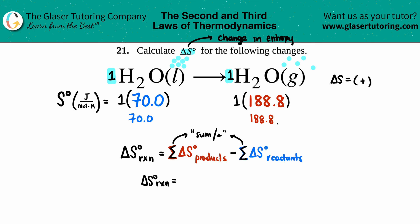Delta S for the reaction equals products, which is 188.8, minus the reactants, which was 70.0. Let's solve. Delta S for the whole entire reaction, we get a positive value, so we hypothesized correctly.